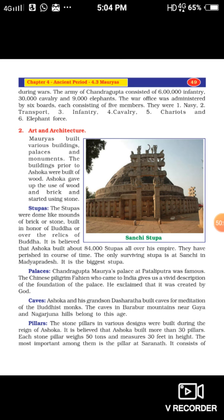The war office was administered by six boards, each consisting of five members: navy, transport, infantry, cavalry, chariots, and elephant force. Now regarding art and architecture of the Mauryas: the Mauryas built various buildings, palaces, and monuments. The buildings prior to Ashoka were built of wood. Ashoka gave up the use of wood and brick and started using stone.